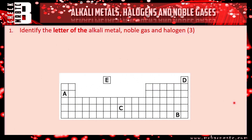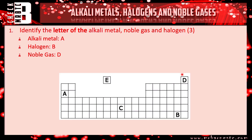Right, let's see how you've done. Starting with the alkali metal — you should remember they are group one, so that's this first column here. One mark for that. The halogens are group seven, therefore it must be B, and your noble gases are group zero at the end here, so D. One mark for each of those.